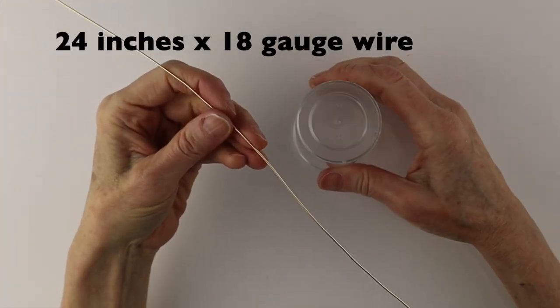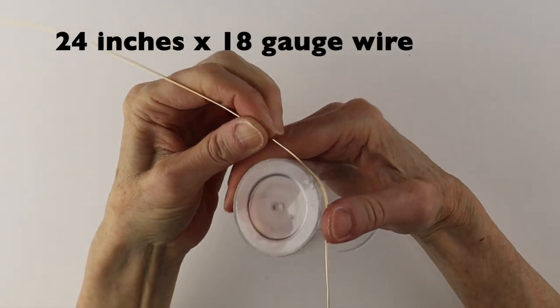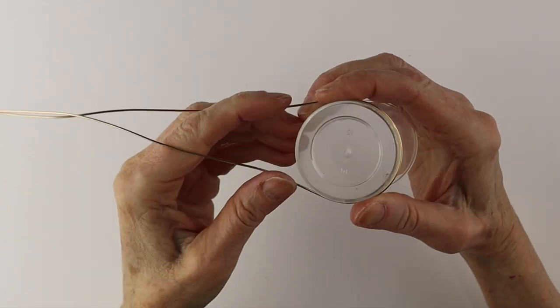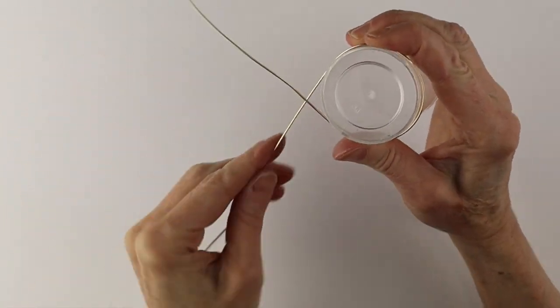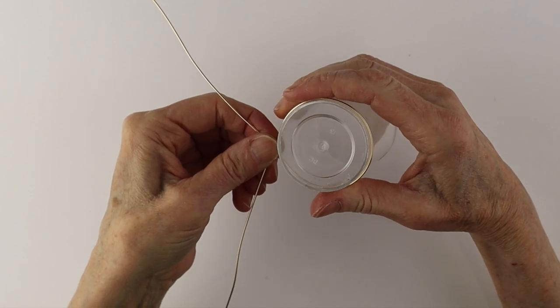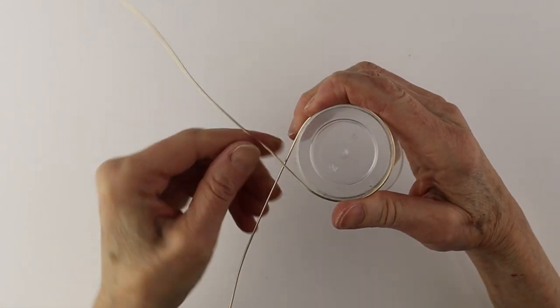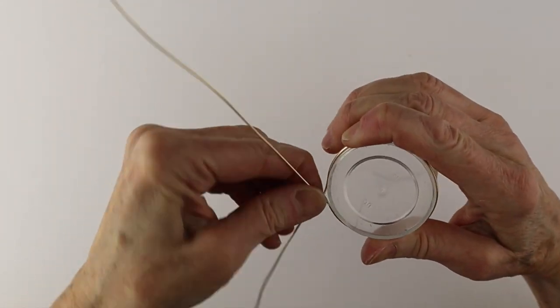So for the last one I did one with 18 gauge wire. So if you only have a smaller wire this works well. So get a larger pill bottle. Bring the wire around and crisscross it and do a twist.